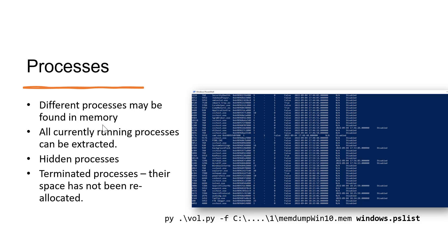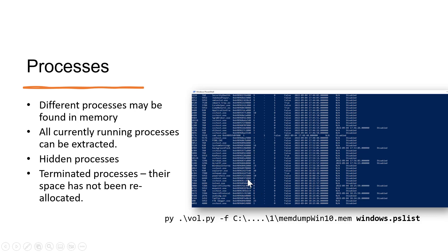For processes, if you use Volatility 3 and access your memory dump — the one we have is for Windows 10 — just type windows.pslist. This will allow you to view all the processes that were running at the time you captured the memory dump. You can see process IDs such as 2828 for ping.exe, the date and time each process was run, and other details. Another process visible is FTK Imager, which is the tool used to create this memory dump.